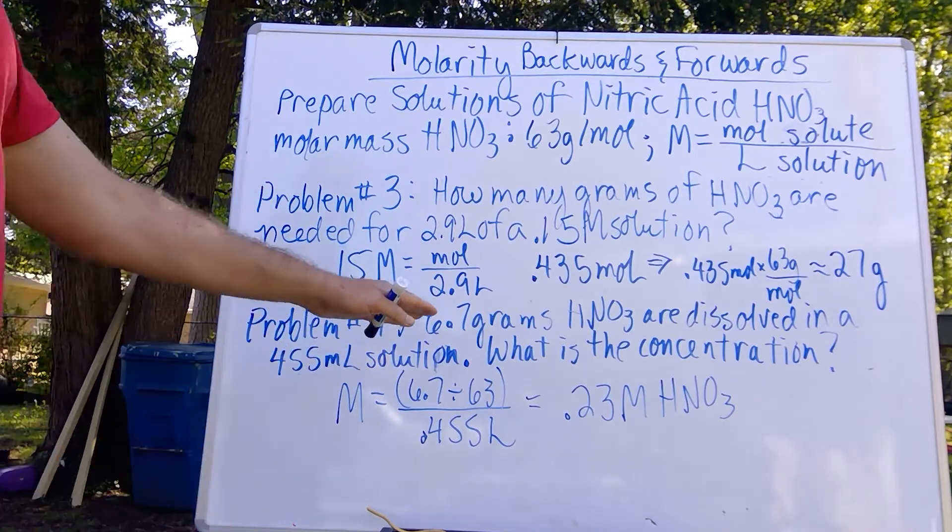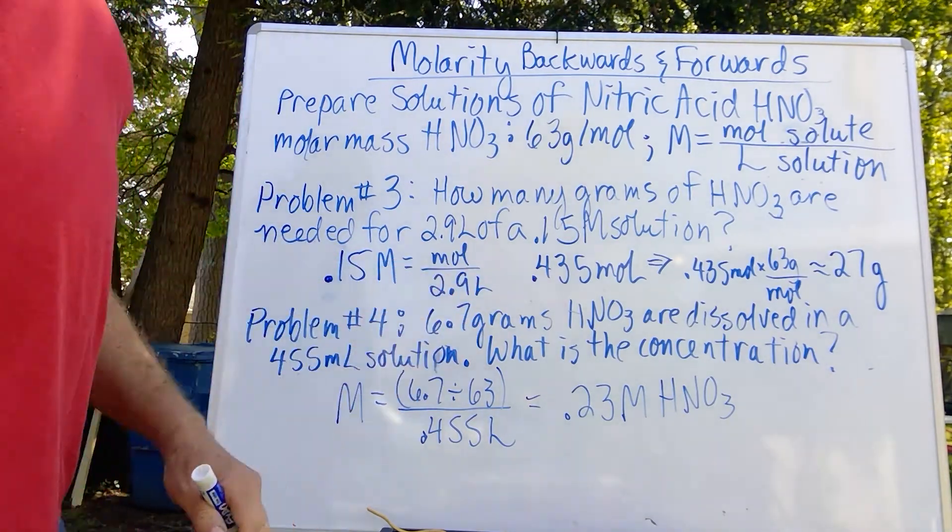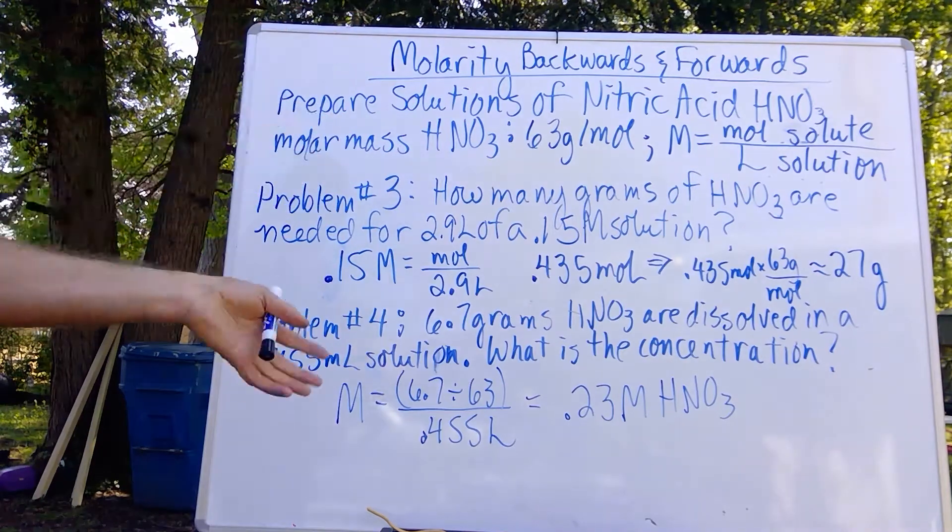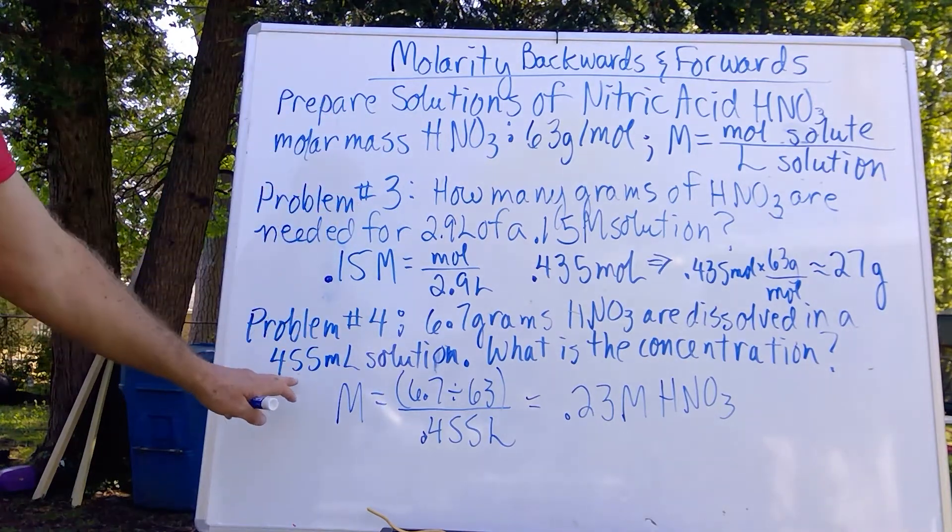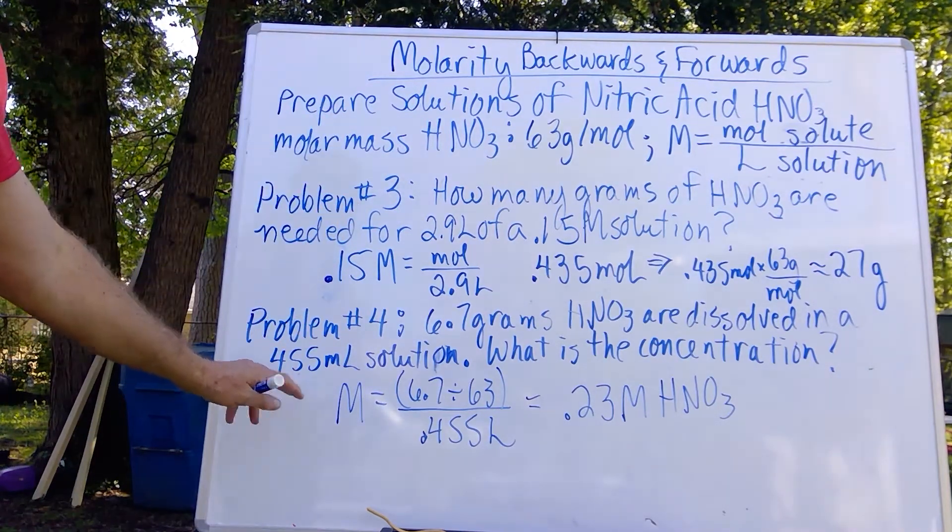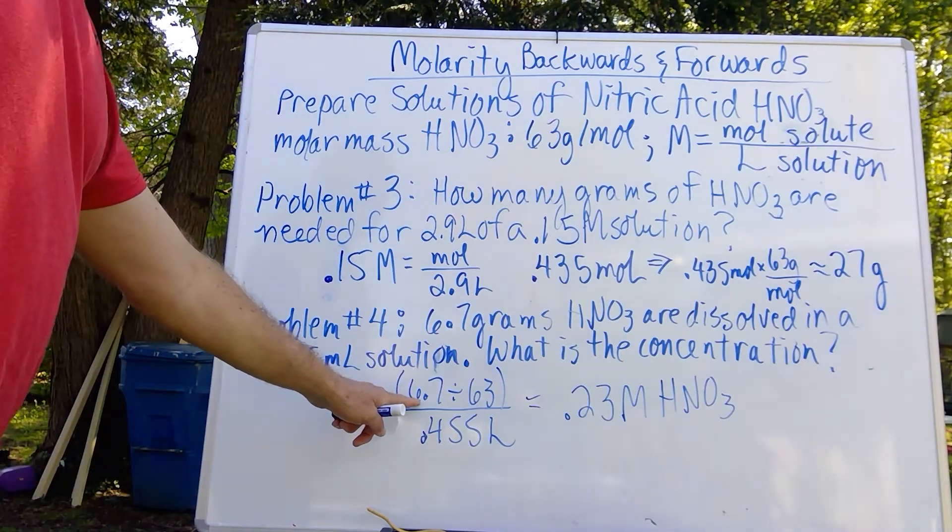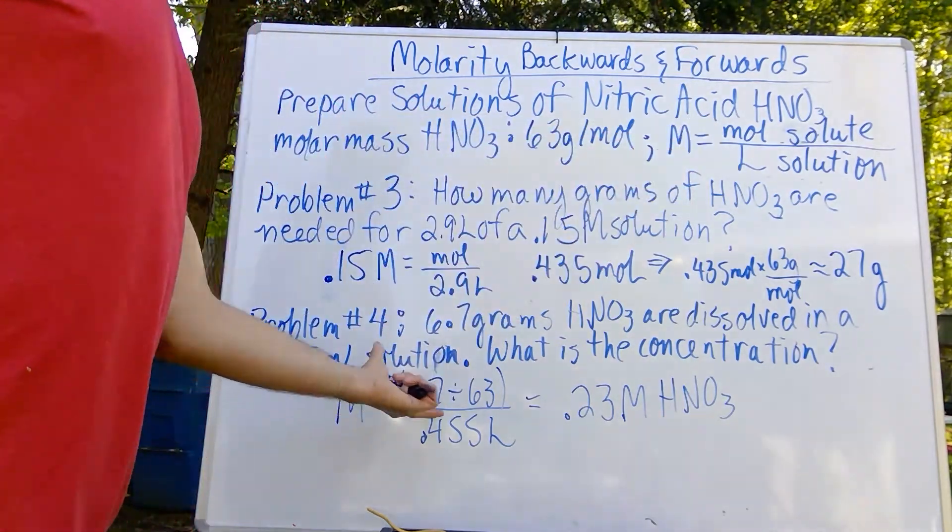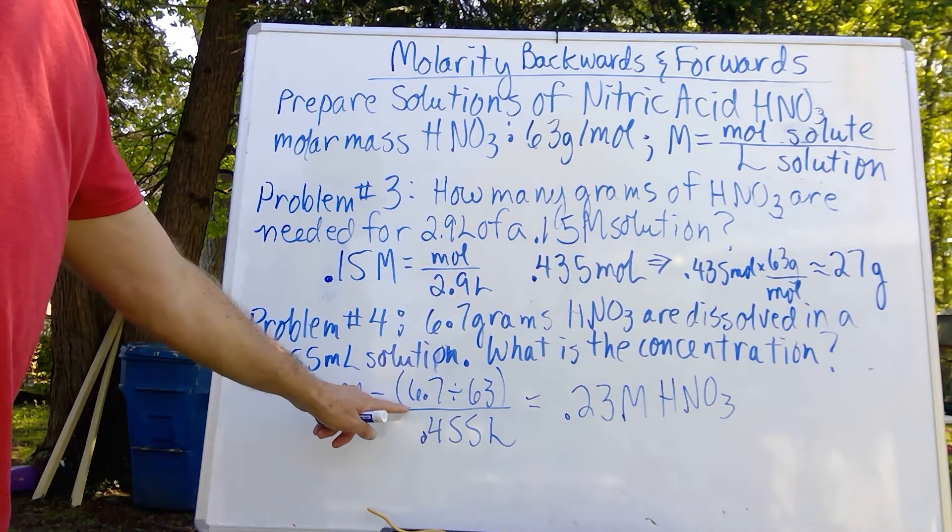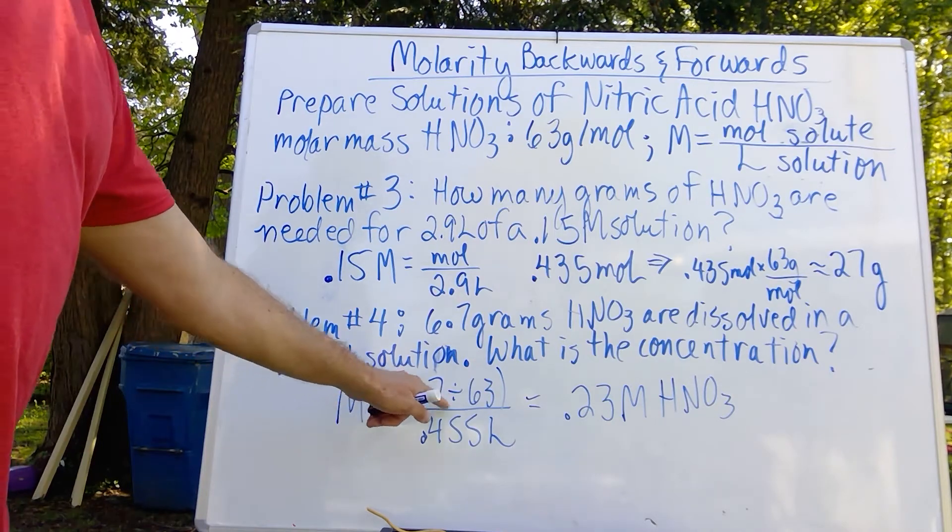Problem number four is where we actually have the known mass of our solute going into a solution. That will be 455 milliliters. So here, I simply do the molarity expression and sort of expand it to where the numerator will have the mass divided by the molar mass, and then over the volume of the solution.